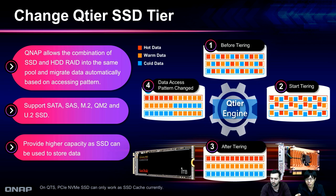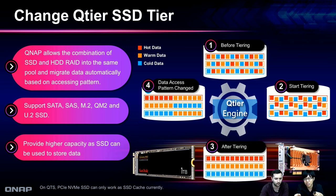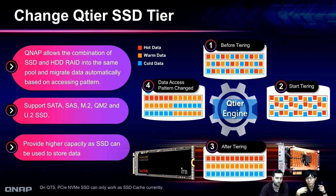For those not familiar with QTier, here's a short introduction. QTier is a hybrid storage solution for the local NAS where you can create a storage system with an SSD array and an HDD array. The system moves data not frequently accessed to the SSD array while keeping hot data in the capacity tier, which is the HDD array. This solution gives you higher capacity storage while also benefiting from SSD performance.